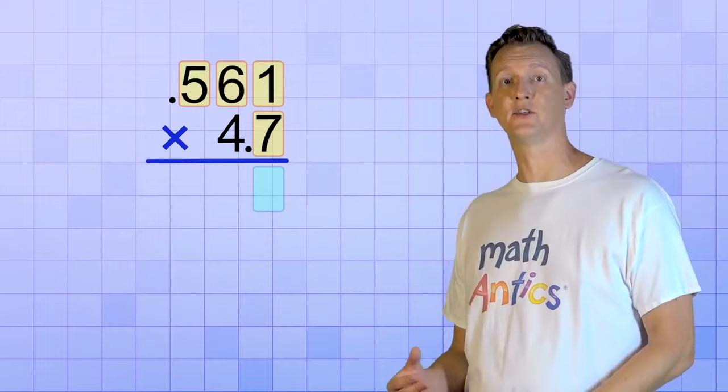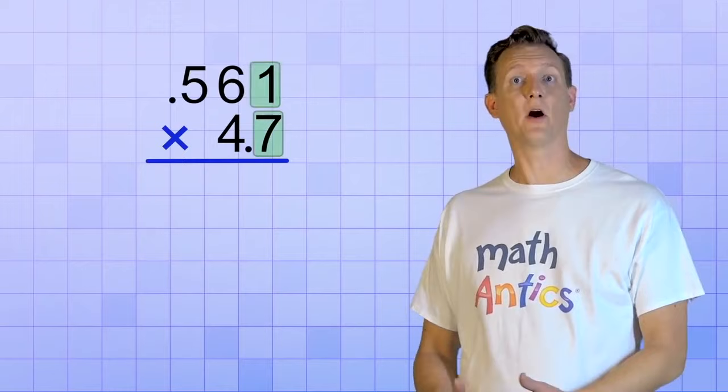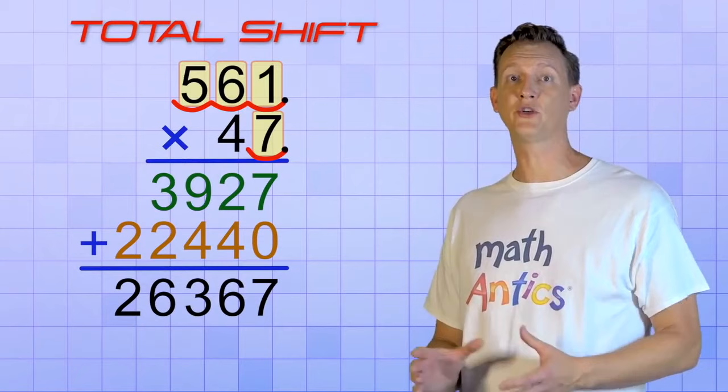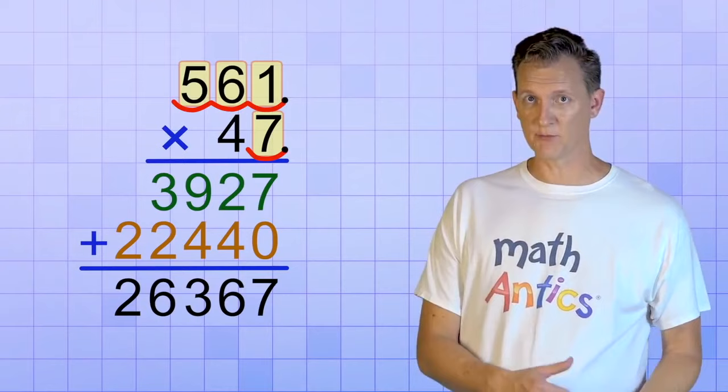Then, keep ignoring the decimal points while you follow the multiplication procedure. Once you have an answer, count up how many places the decimal points are shifted in the problem you're working. Don't forget, it's the total shift of both the top and bottom decimal points. And then, shift the decimal point in your answer to the left that same number of places.